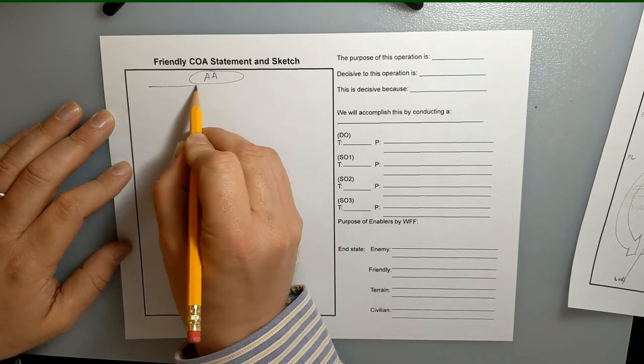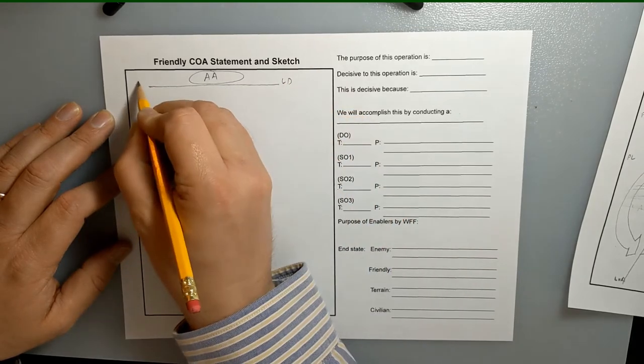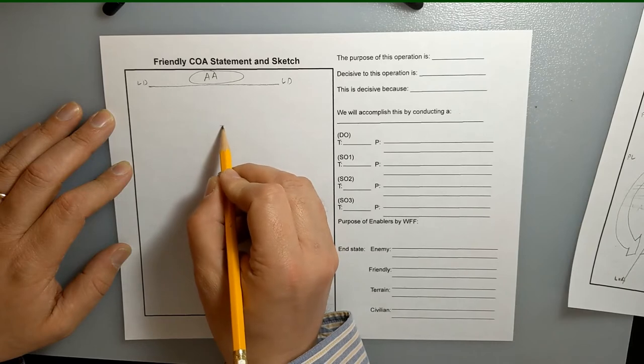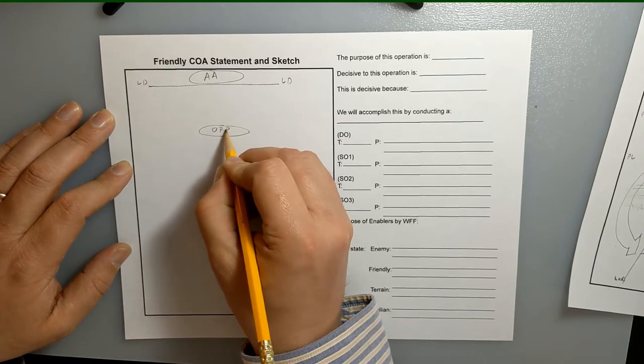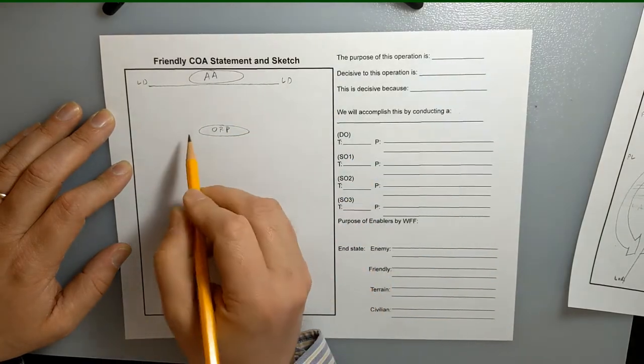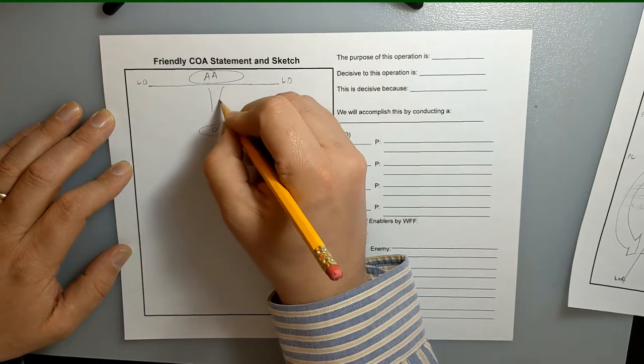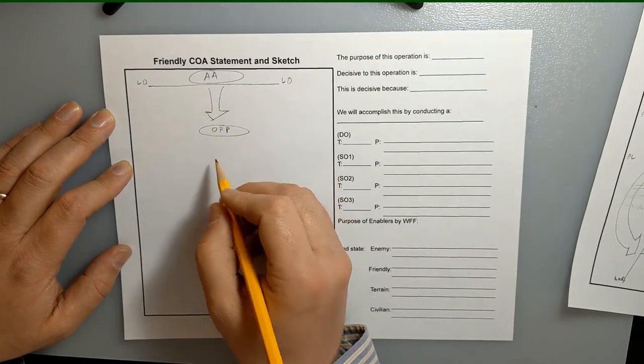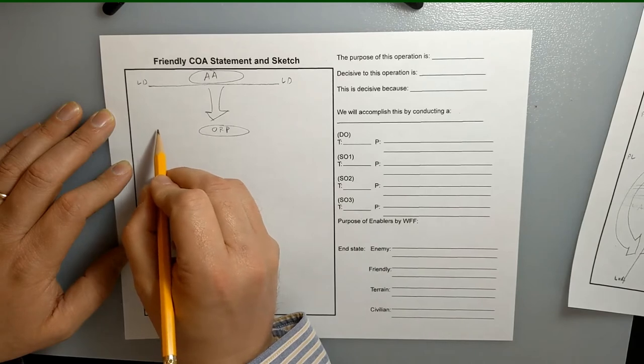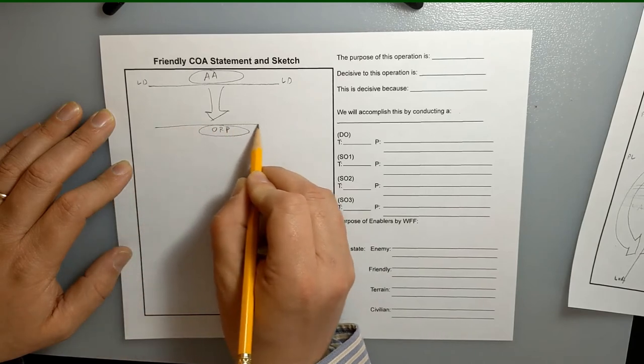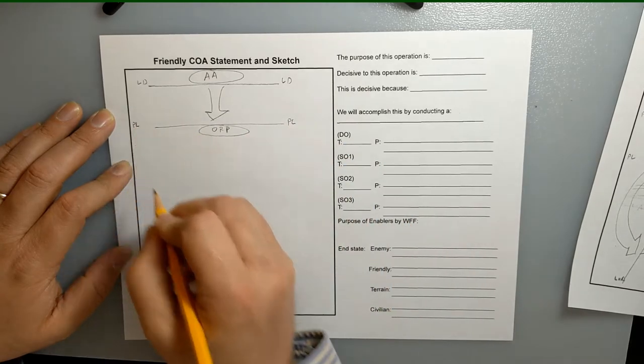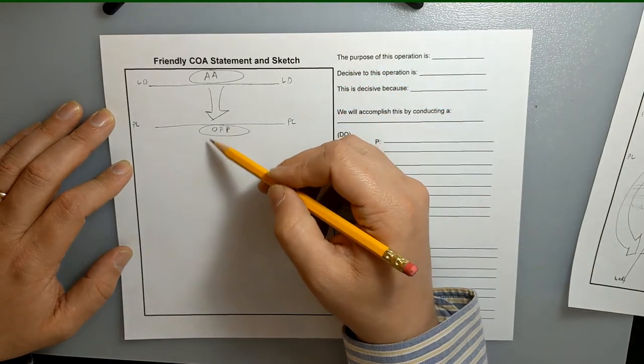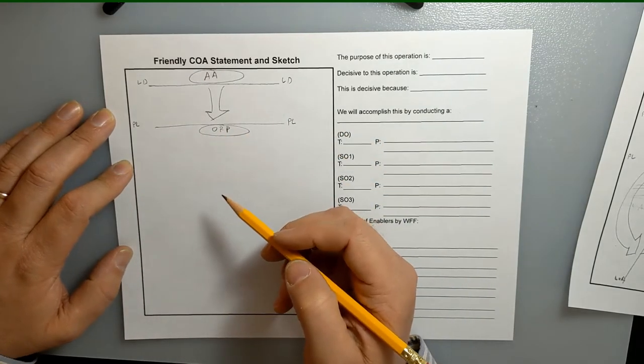But we're going to need some kind of line of departure. We know that's going to happen. All right, and we're going to leave from the assembly area, and we're going to move to an ORP, right? So we've got to put our ORP on here, and since that's going to be a movement, there's going to be an axis to get us there. All right, and thinking through this, there's probably some phase line here, right, because we're going to spend phase one in the assembly area, phase two moving to the ORP, and then phase three is all going to happen in the ORP, so there's probably a phase line here because we're going to act differently at that point.